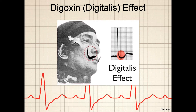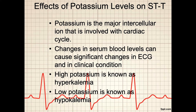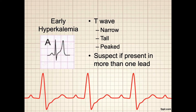Potassium levels have a significant effect on the nature of the ST segment. Potassium is the major intracellular ion involved with the cardiac cycle, and changes in blood serum levels can cause significant changes in the ECG and in the clinical condition. A high potassium level is known as hyperkalemia, while a low potassium level is known as hypokalemia. As serum potassium levels become more abnormal, so too does the ECG. Here we have an example of ST changes in early hyperkalemia — note that the T wave is narrow, tall, and peaked. If suspected, more than one lead should be reviewed.